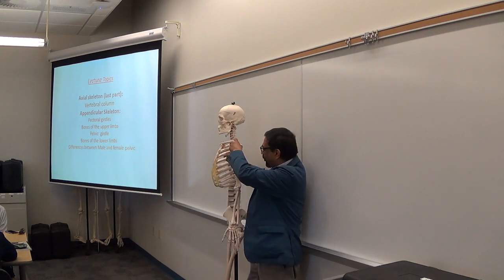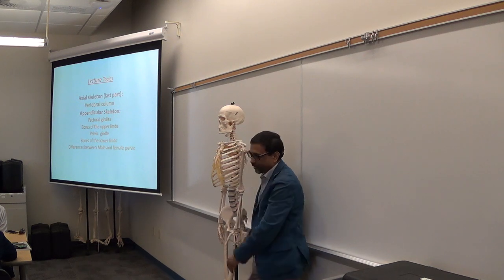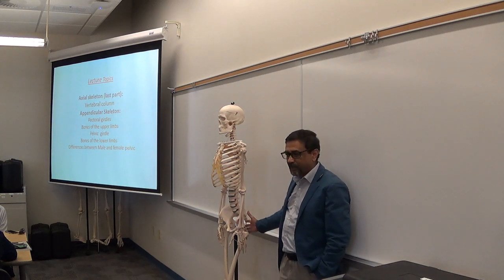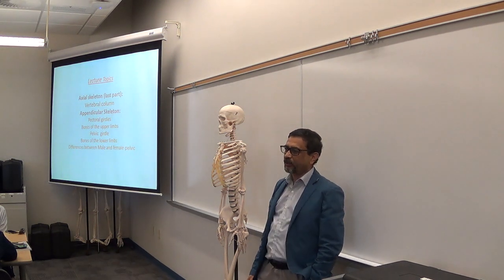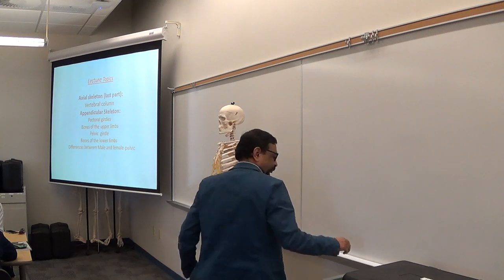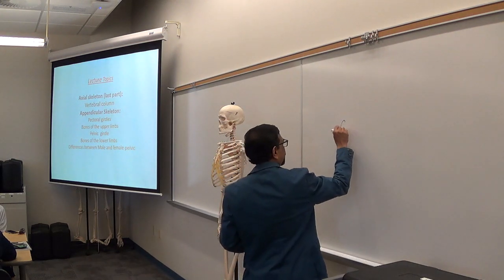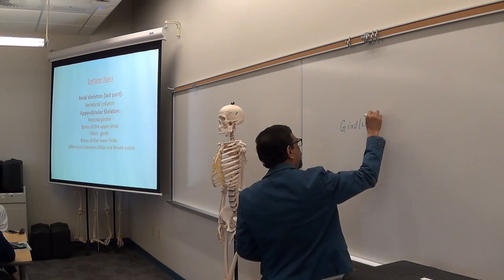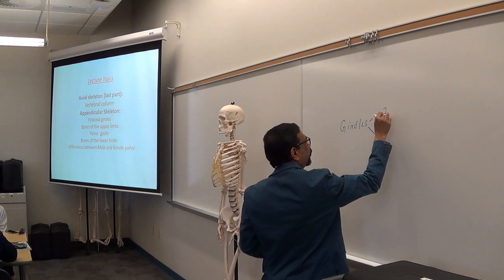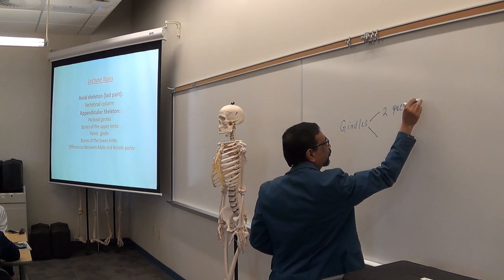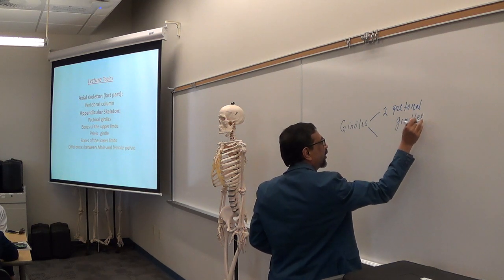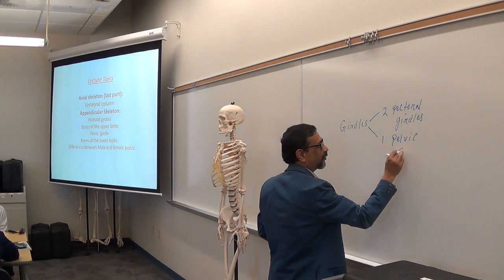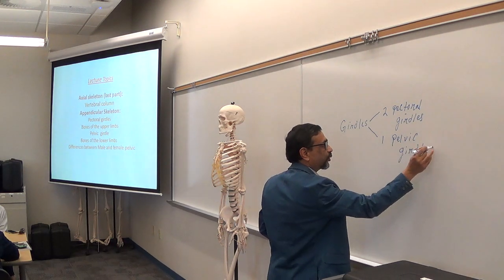These two are upper extremities and these two are lower extremities. Both upper and lower extremities have girdles. First we will talk about the girdles.